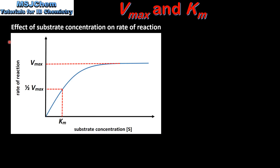Here we have a graph of the effect of substrate concentration on the rate of reaction of an enzyme. From this graph we can determine two things: the Vmax and the Michaelis constant Km.